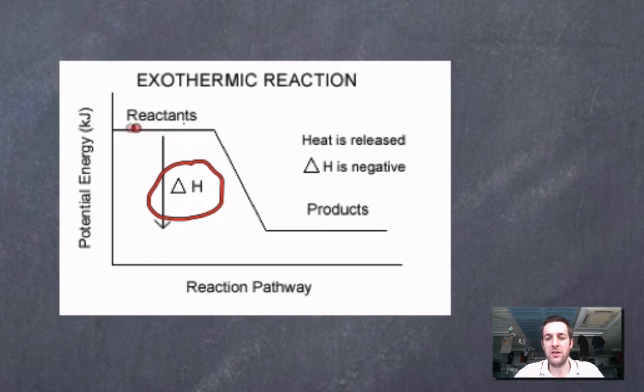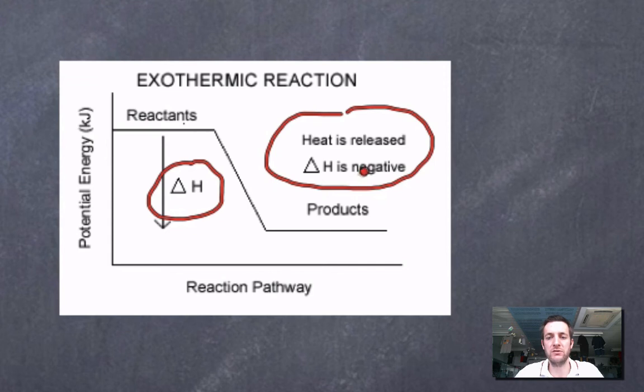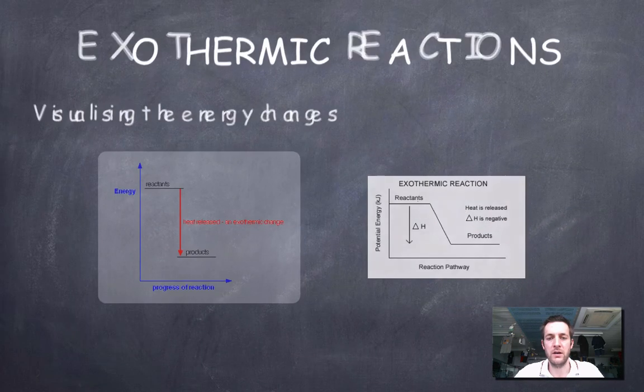And if the enthalpy has gone down from the reactants to the products, and heat has been released because that enthalpy got converted into heat, then the enthalpy change, delta H, is negative. And that's a really important thing to remember, that for exothermic reactions, heat is released, the enthalpy falls, and therefore the delta H, or the enthalpy change, is negative.